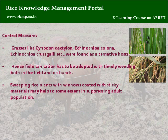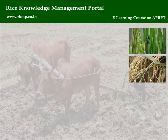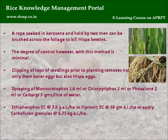Control measures: Grasses such as Cynodon dactylon, Echinochloa colona, and Echinochloa crusgalli serve as alternative hosts, so field sanitation with timely weeding both in the field and on bunds is essential. Sweeping rice plants with nets coated with sticky materials helps suppress adult populations. A rope soaked in kerosene held by two persons can be brushed across the foliage to kill Hispa beetles, though the degree of control with this method is minimal.